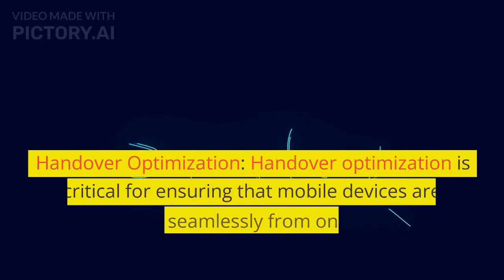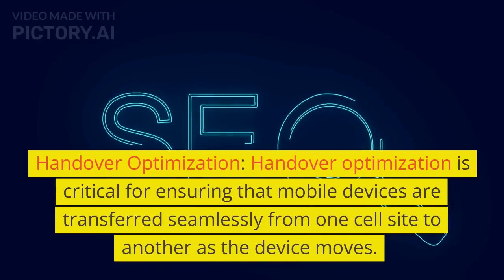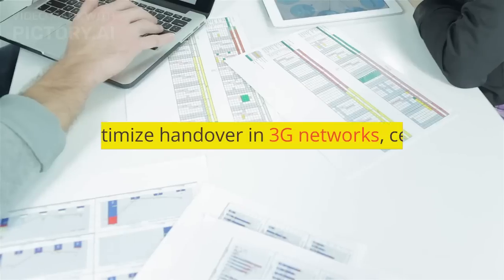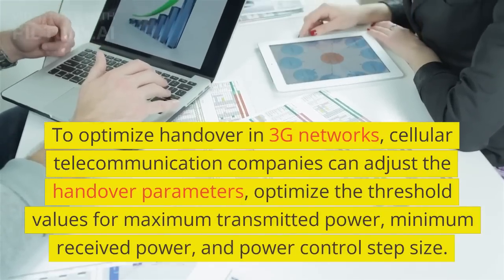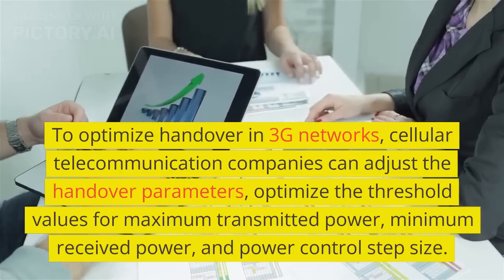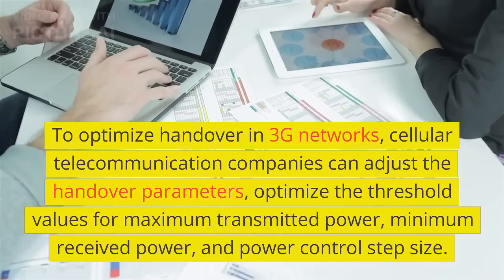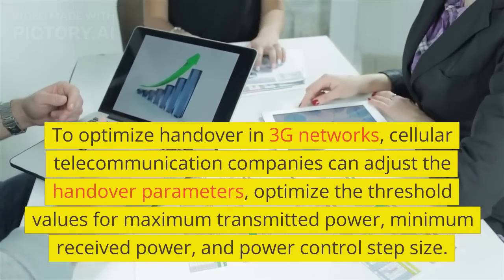Handover Optimization: Handover Optimization is critical for ensuring that mobile devices are transferred seamlessly from one cell site to another as the device moves. To optimize Handover in 3G networks, cellular telecommunication companies can adjust the Handover parameters and optimize the threshold values for maximum transmitted power, minimum received power, and power control step size.